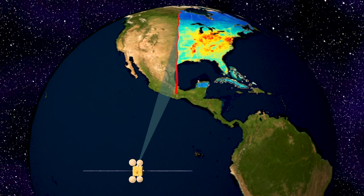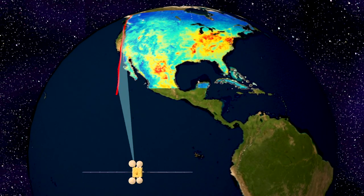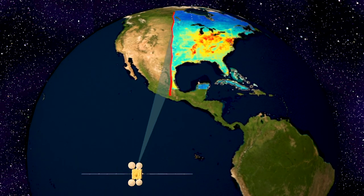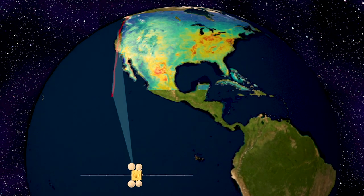TEMPO is an instrument that will measure atmospheric pollution over greater North America from the Atlantic to the Pacific, from the Canadian oil sands to below Mexico City. They will do that every daylight hour.